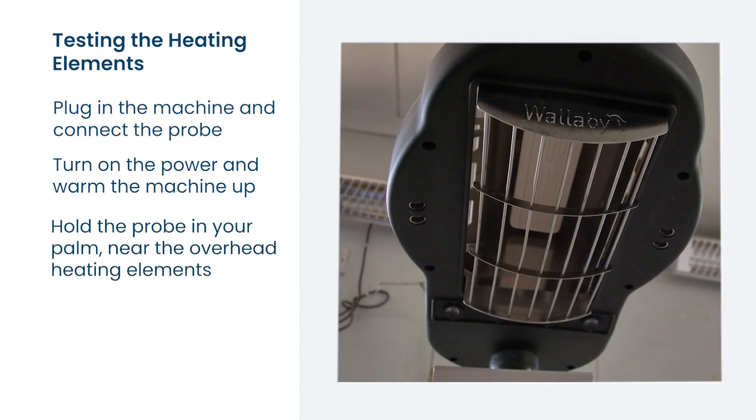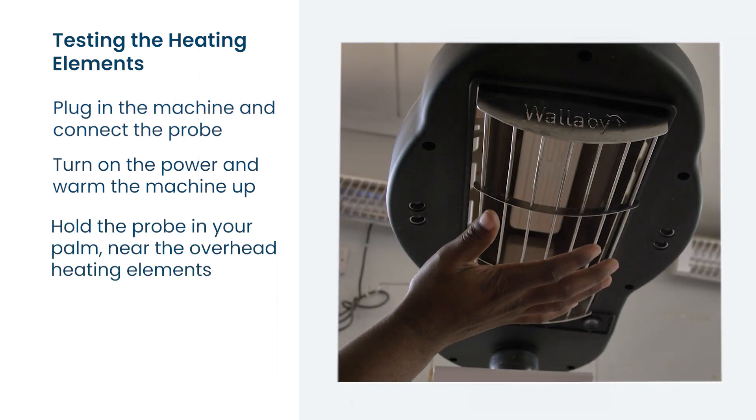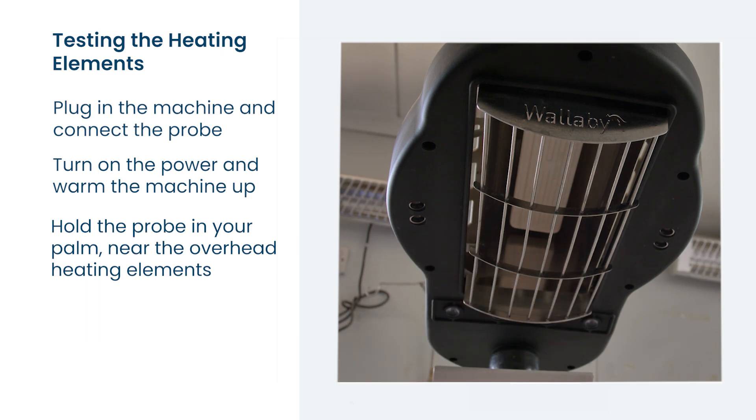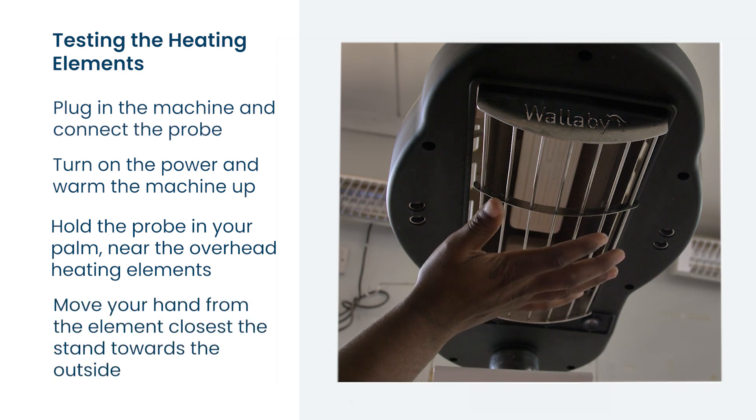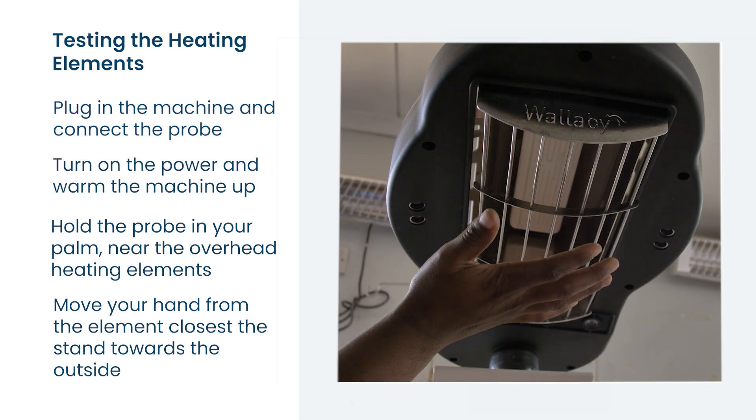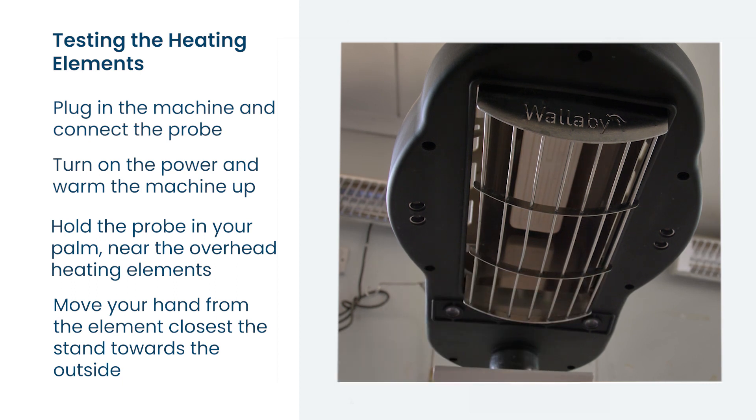Then hold the temperature probe in the palm of your hand and hold your hand up near the overhead heating elements. As you move your hand from the element closest to the stand towards the outside of the machine, if the heat suddenly drops it might be that some parts of the heating elements are not working and need replacing.